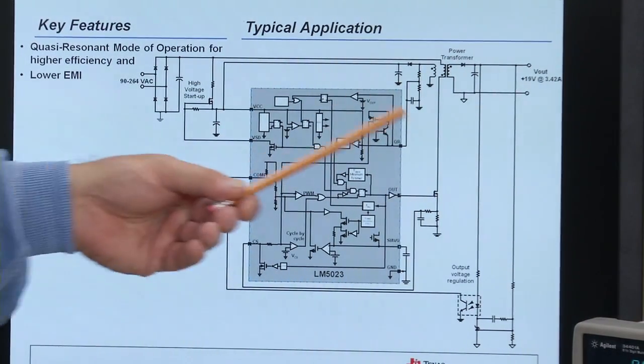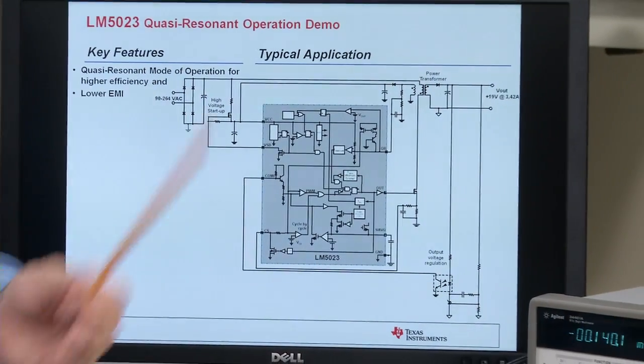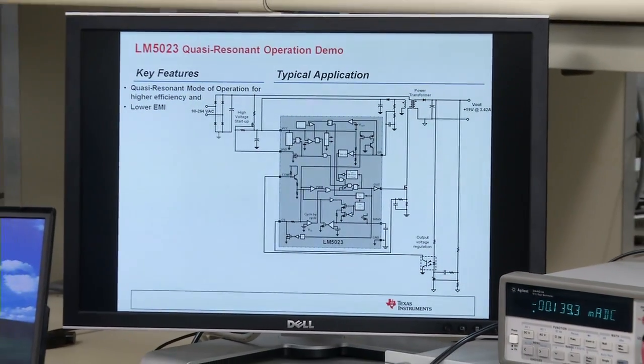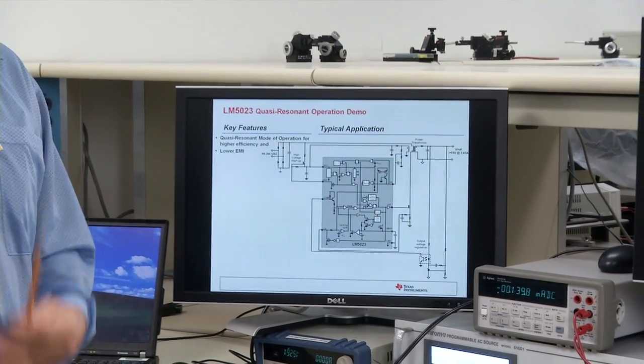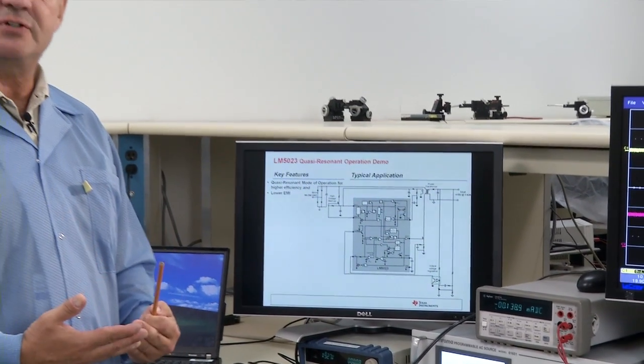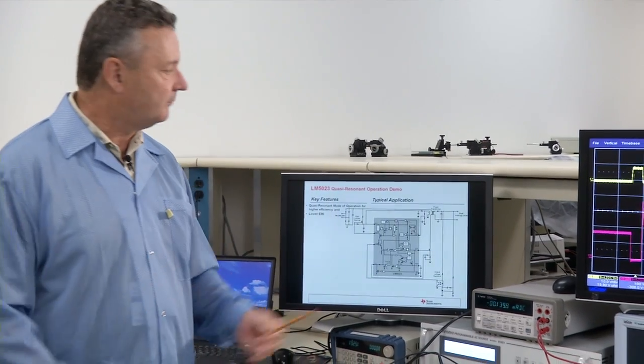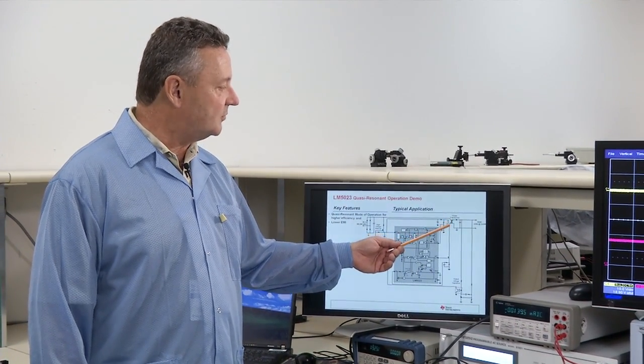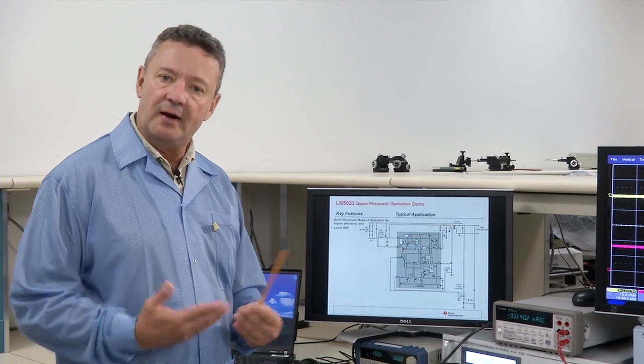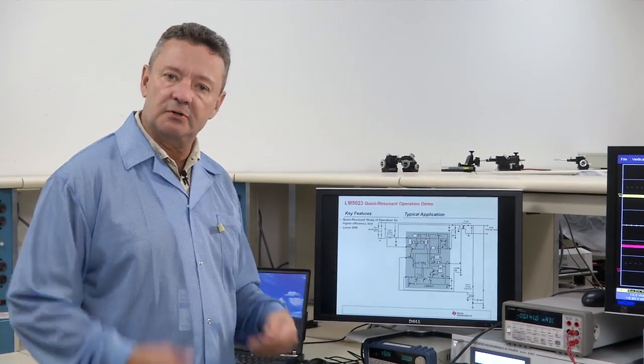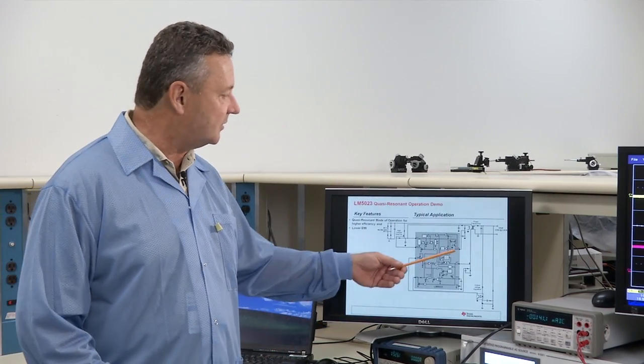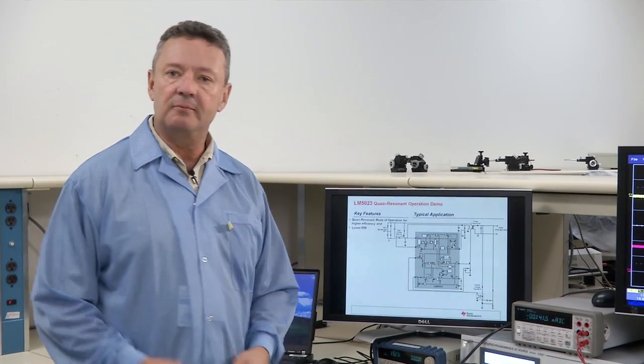So how do we do this? We don't really want to look at the drain voltage because this is hundreds of volts in an offline application. So what we do is actually look at the auxiliary winding voltage. Because it's a coupled transformer, it's going to have the same waveform as our primary signal. When this drain voltage rings down to zero, our auxiliary winding voltage will also ring down to zero. We have a voltage comparator that senses when the voltage is approximately zero, and we turn our primary switch back on as quickly as we possibly can.